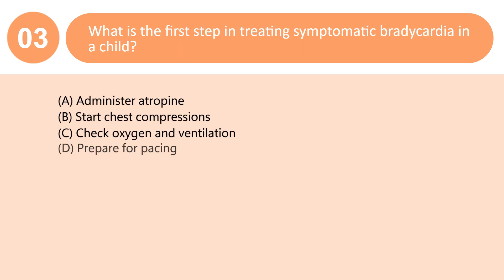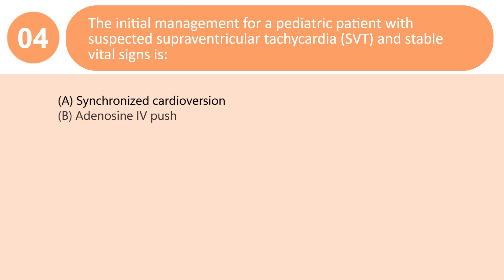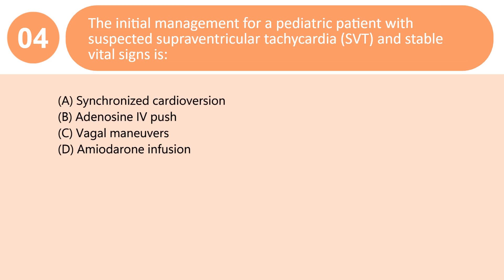What is the first step in treating symptomatic bradycardia in a child? A. Administer atropine. B. Start chest compressions. C. Check oxygen and ventilation. D. Prepare for pacing. Answer: C. Hypoxia is a common cause of bradycardia in children. Always ensure adequate oxygenation and ventilation before medications or pacing.